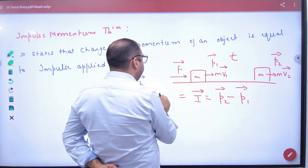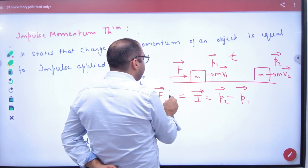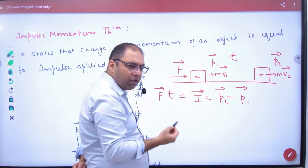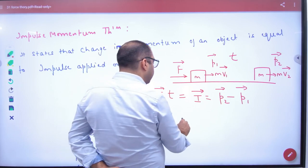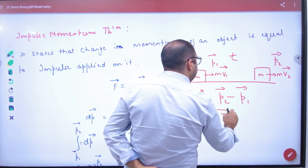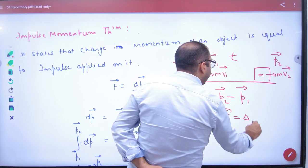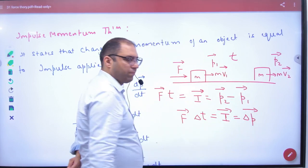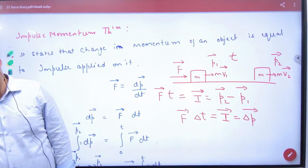So there are two formulas: force into time and the other change in momentum. In some books, force into delta T, change in time, is impulse and is equal to delta P vector. This is to prove. To make the diagram together.